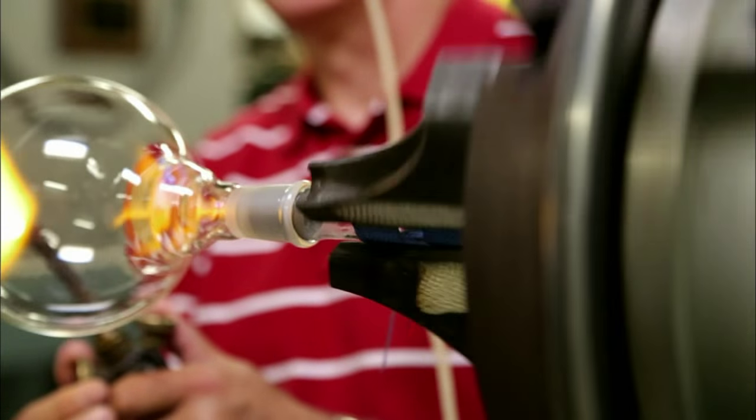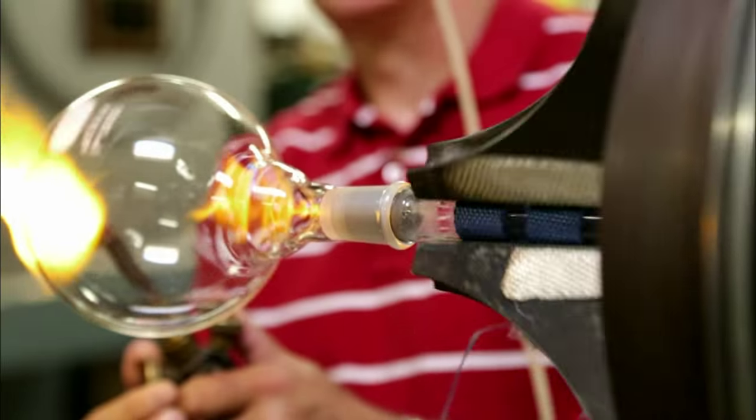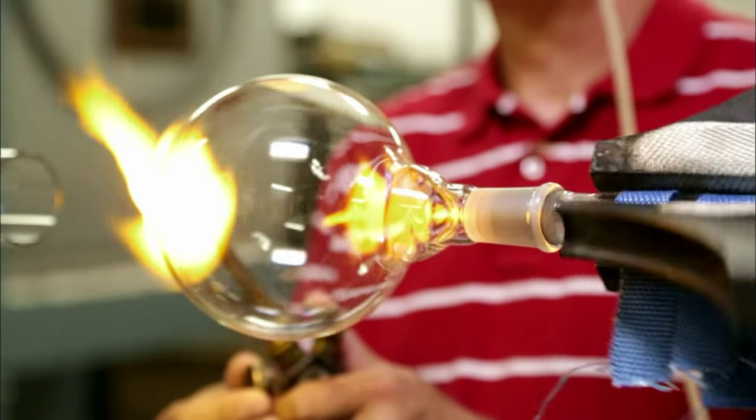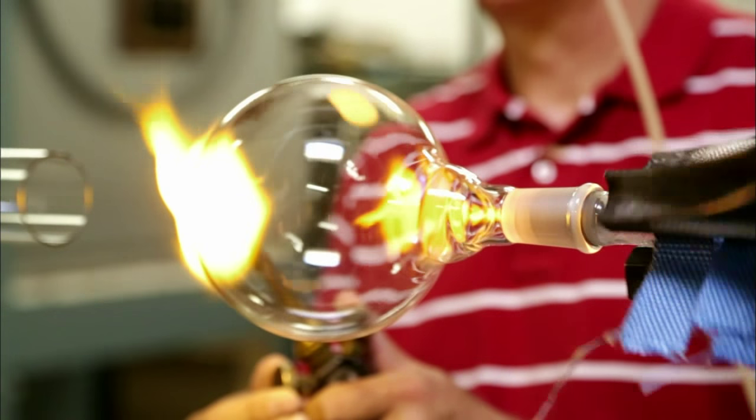So the lathe rotates the glass for us. The tail stock on the lathe moves so I can feed in glass or take glass away and then by blowing air into it I can expand the glass. Even though a machine is involved it's a handmade piece.